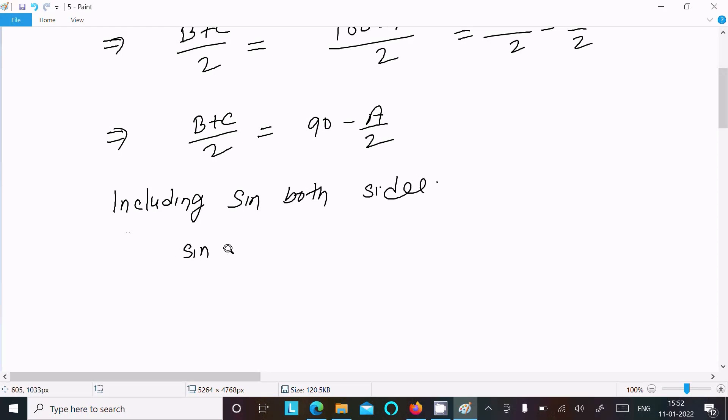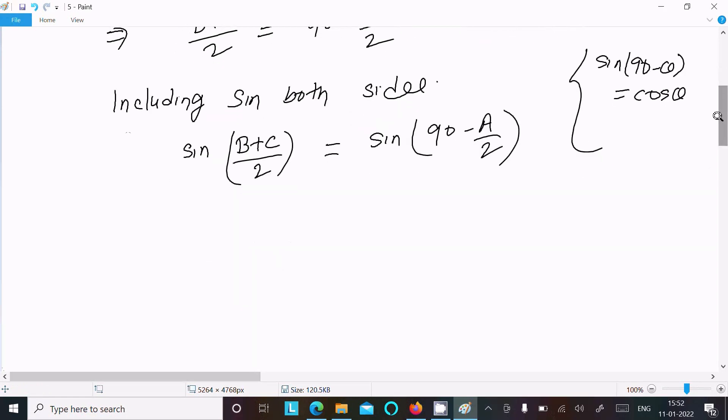So we can write sin((B+C)/2) and here sin(90 - A/2). We know the formula: sin(90 - θ) = cos(θ), so here...